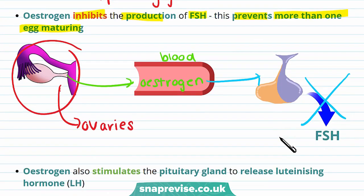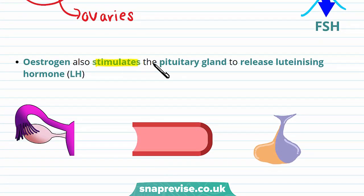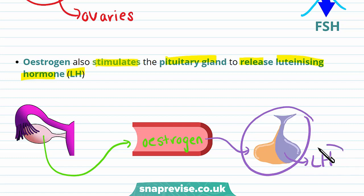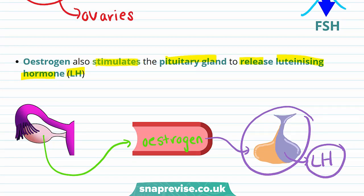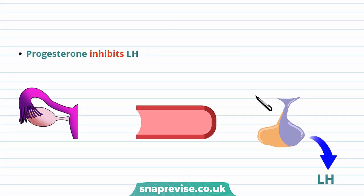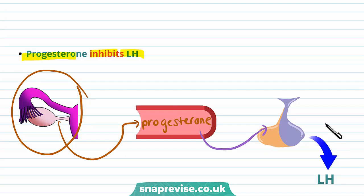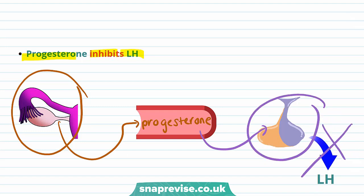Estrogen also has another function: it stimulates the pituitary gland to release luteinising hormone, or LH. Estrogen is released from the ovaries, travels in the blood, and stimulates the pituitary gland to release LH. There's another hormone involved in menstruation — progesterone. Progesterone inhibits or stops the release of LH. It is also released from the ovaries, travels in the blood, and inhibits the release of LH from the pituitary gland.